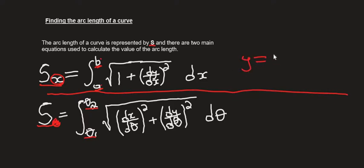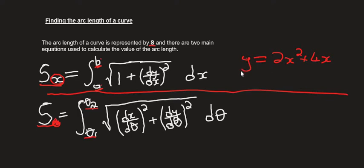y is equals to 2x squared plus 4x. This equation has two variables — y and x only. So what you need to do is differentiate y. You are going to need dy over dx.